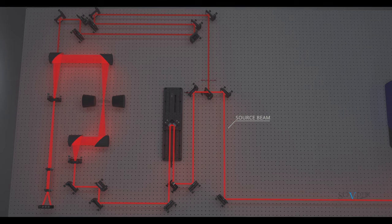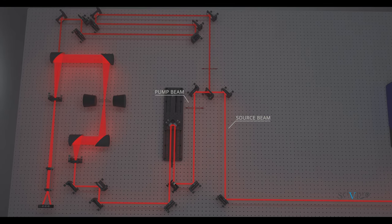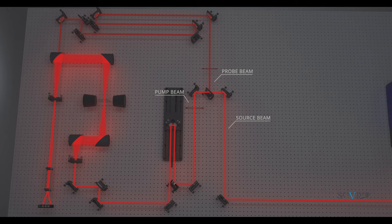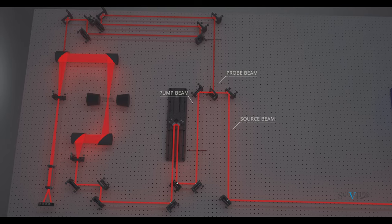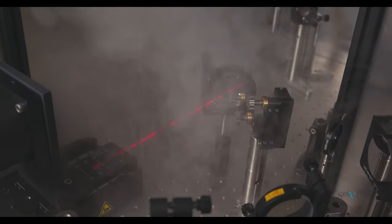Here, 99% of the transmitted beam is used as a pump beam, exciting the sample, and the other 1% is used as a probe beam for time domain detection. We will now separately follow the path of the two beams, starting from the pump.